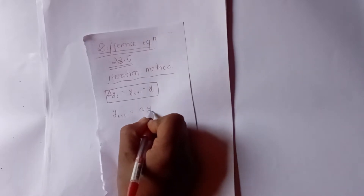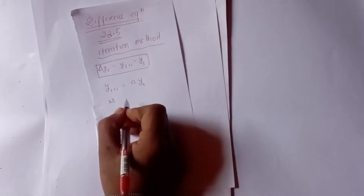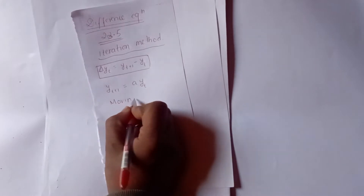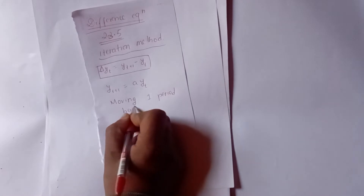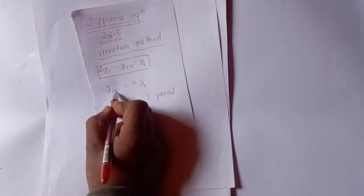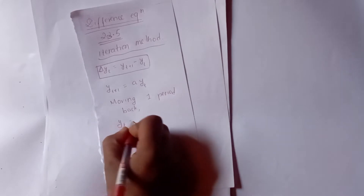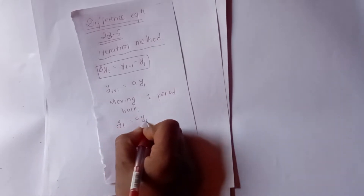There will be delta of yt, and yt plus 1 minus yt. In this iteration, we have yt plus 1 equals a times yt. Moving one period back, one period back move is t plus 1 minus 1. This equation is yt equals a times yt minus 1.